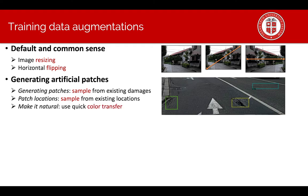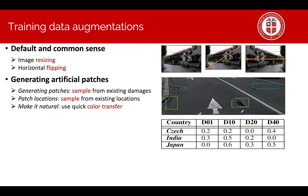There are several algorithms to make the patch more natural to the existing or targeting image. We use quick color transfer in order to make the color of the patch more natural to the targeting image. We need to generate the damage type and keep the balance of damage type per country. So we provide different augmentation probability for different damage types and different countries.